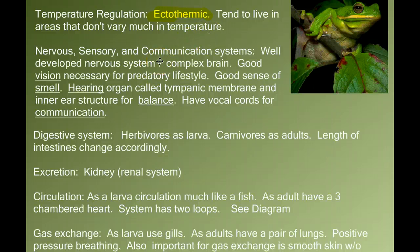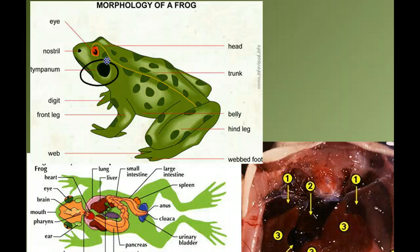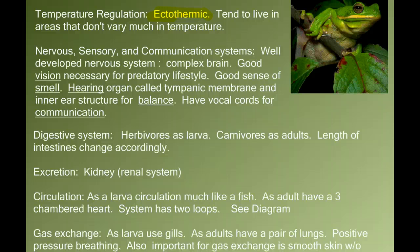Amphibians have to develop sensory and nervous system adaptations that are different from being in water. Vision becomes much more important on land than in water, and sense of smell also. We know that frogs can hear because they vocalize. When we look at this diagram of a frog, there's a structure called a tympanum — a thin membrane stretched over the opening to the ear canal. This membrane can vibrate and pick up vibrations from the air and transmit them to the inner ear structure for hearing. Frogs also have vocal cords, so vocal communication is very important. Frogs are predatory, so keen eyesight is important for that lifestyle.